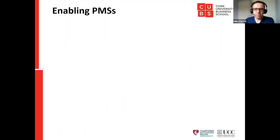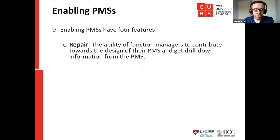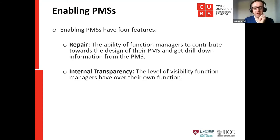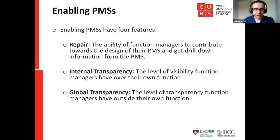An enabling PMS has four features. The first is repair — the ability of function managers to contribute towards the design of their PMS and get drill-down information from it. A less enabling or coercive system prevents you from feeding into the design or accessing deeper information. The second is internal transparency — the level of visibility function managers have over their own functions. A more enabling system might have four or five measures where a coercive one might have only two.